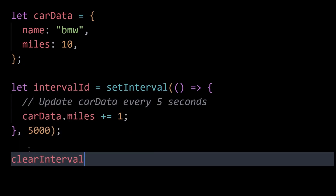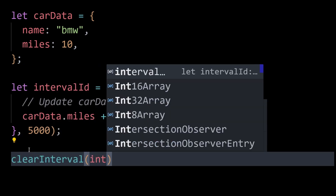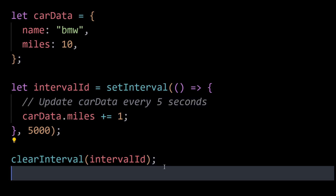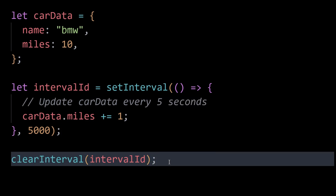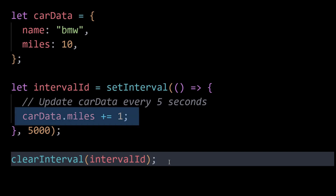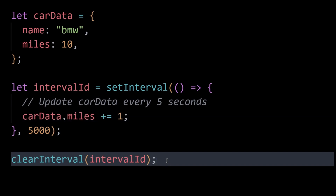To fix this issue and prevent a memory leak, make sure to always stop timers when they're not needed. If you're done with an interval or a timeout, clear them using clearInterval or clearTimeout respectively. This action stops the timer and allows any referenced objects within its callback to become eligible for garbage collection, provided there are no lingering references.